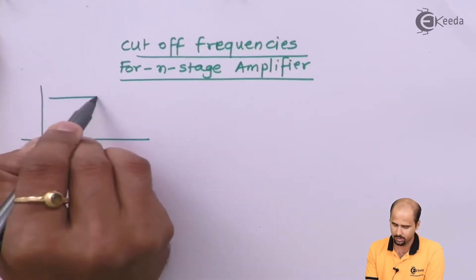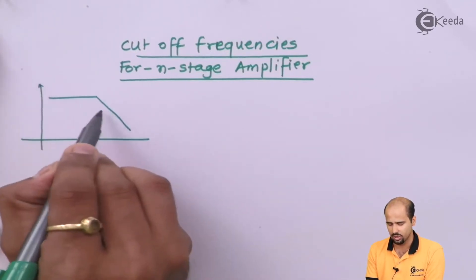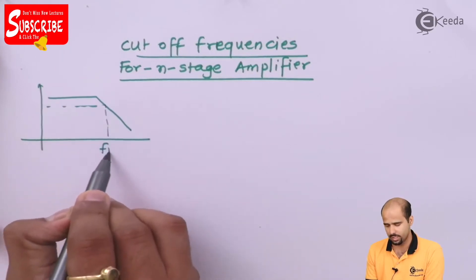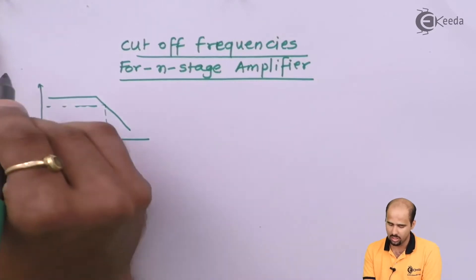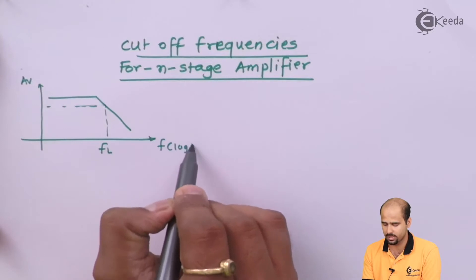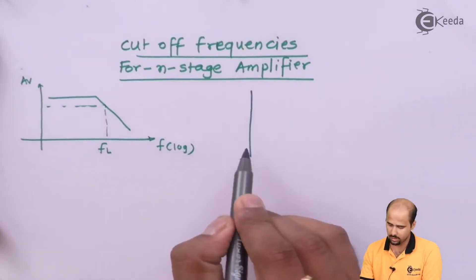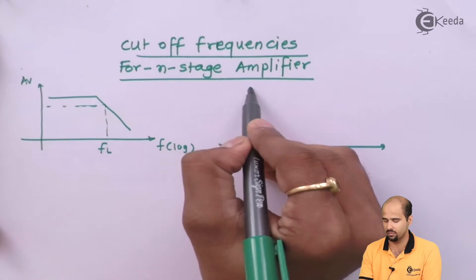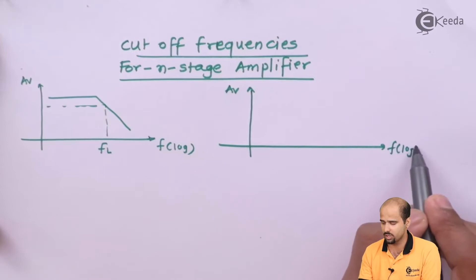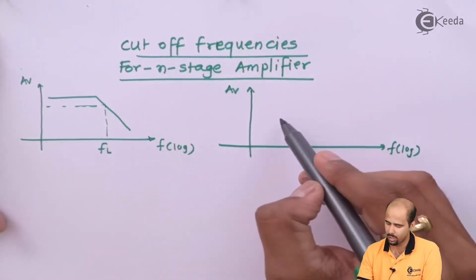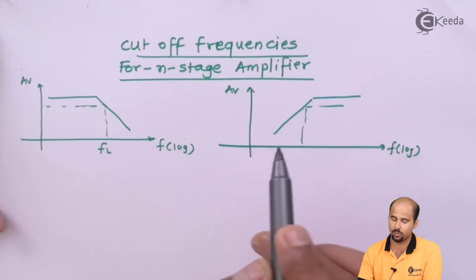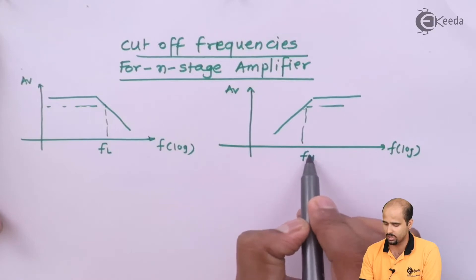Here we will be looking at the RC network, where this is your cutoff frequency understood as FL — whereas the y-axis is AV and the x-axis is frequency in logarithmic scale. Then we have another graph where the y-axis is AV and x-axis is frequency in logarithmic scale, but the circuit is different, giving a different value of cutoff frequency, which we call FH.